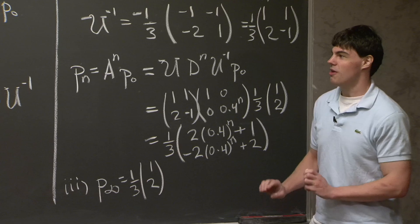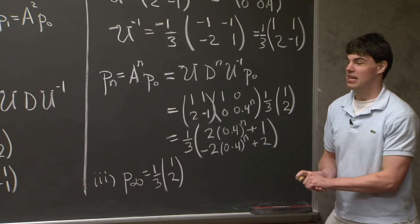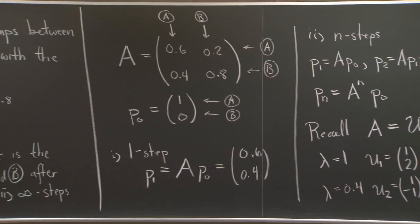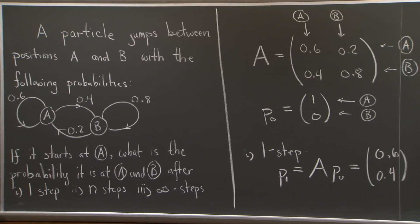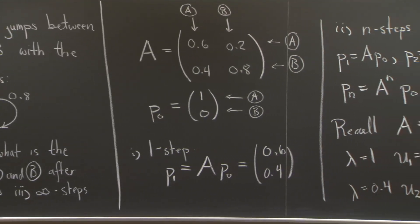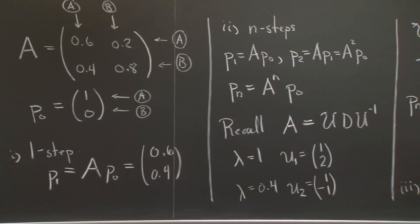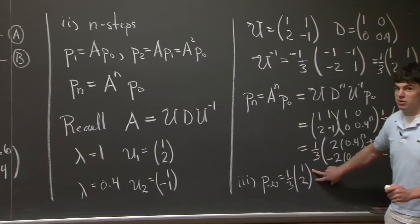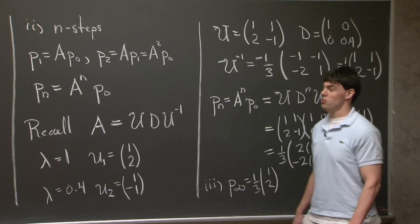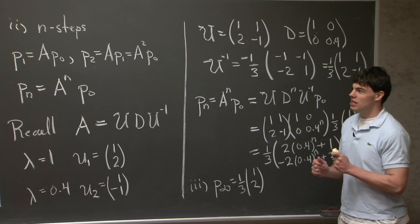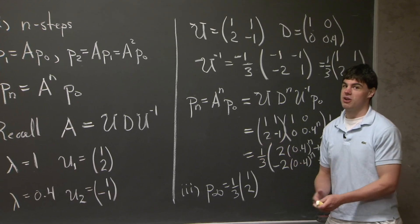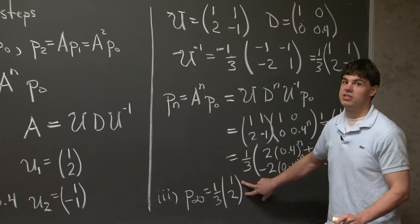So just to recap, we started off with a particle starting at A. And then after a very long time, the particle winds up with a probability distribution, which is 1 third, 1 and 2. And this is quite characteristic of Markov matrix chains. Specifically, we note that 1 third, 1, 2 is a multiple of the eigenvector corresponding to eigenvalue 1. So even though the particle started at position A, after a long period of time, it tended to forget where it started and approached, diffused into this uniform distribution.